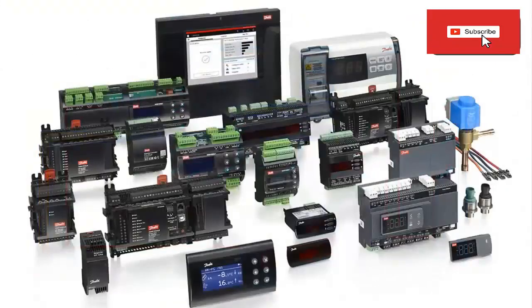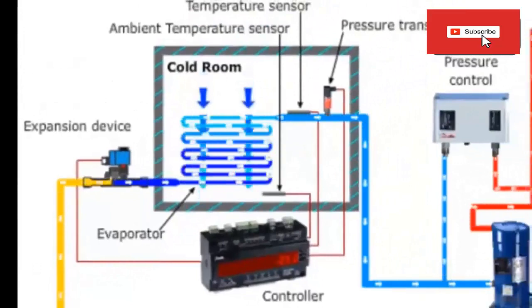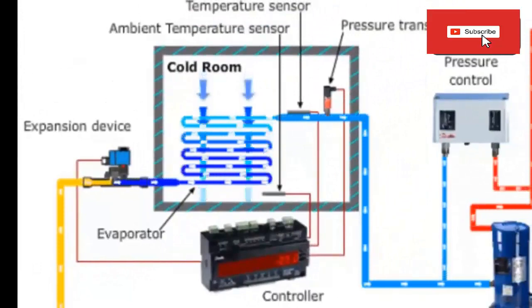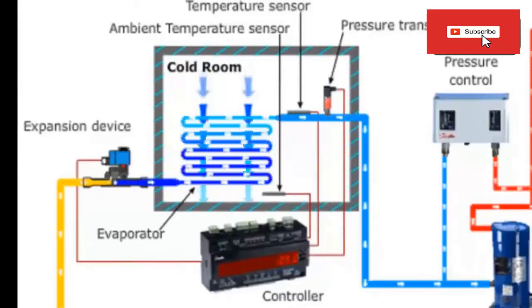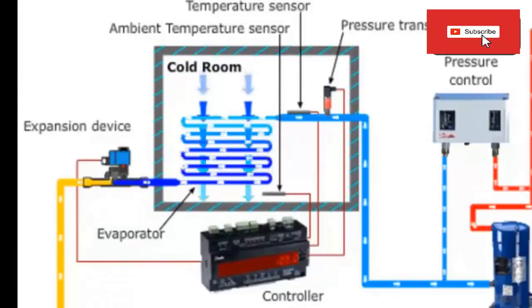The electronic room controller is responsible for managing the electronic expansion valve according to the pressure and temperature values shown by the sensors. This precise control allows exact control of the superheat at the outlet of the evaporator. In this way, energy consumption can be saved and the compressor can be protected at the same time.